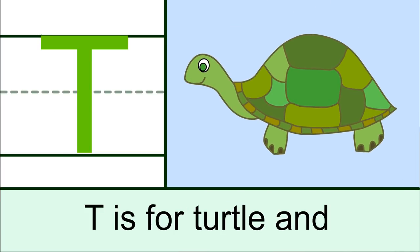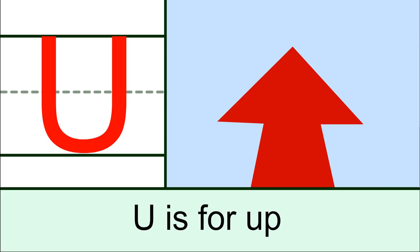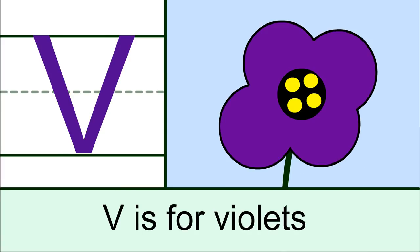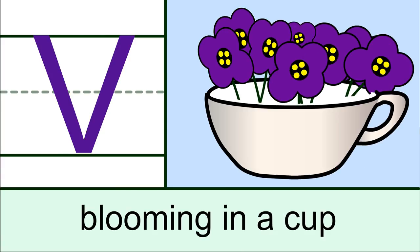T is for turtle and U is for up, V is for violets blooming in a cup.